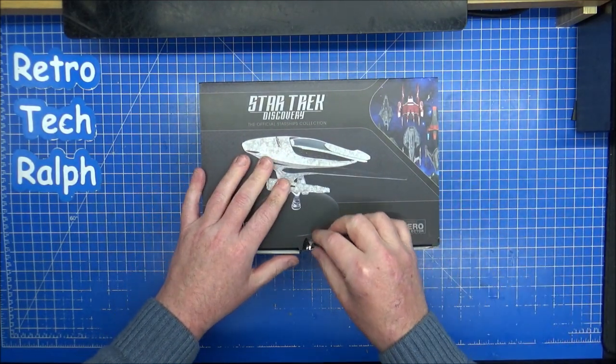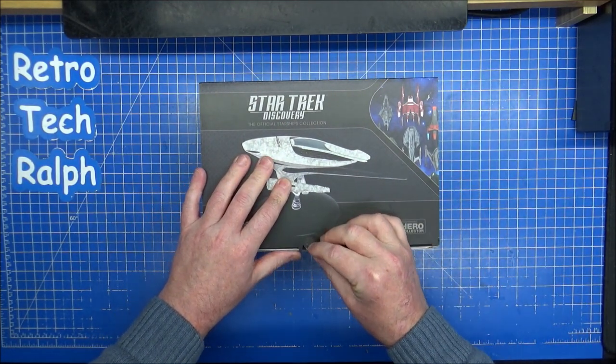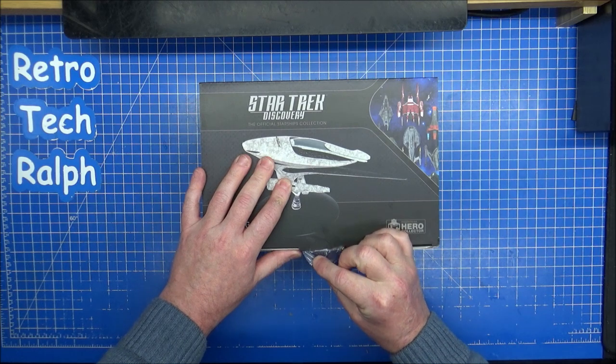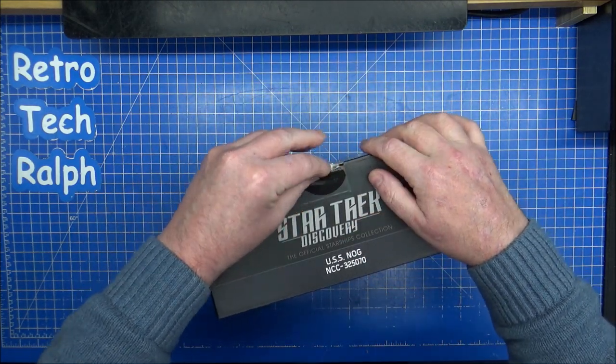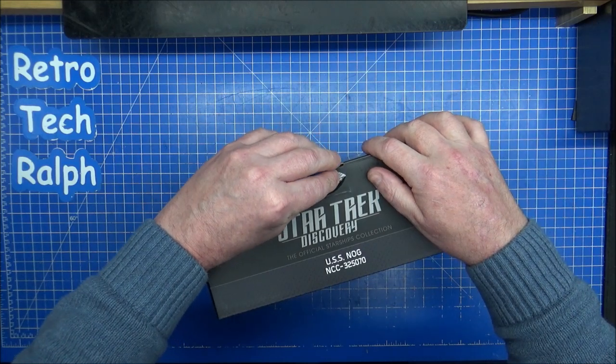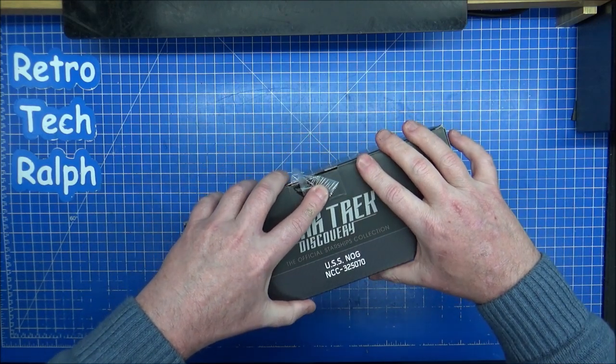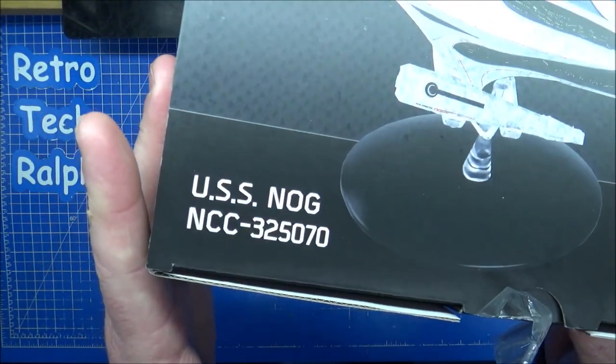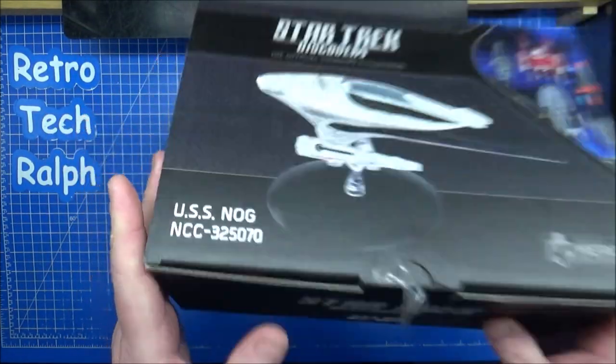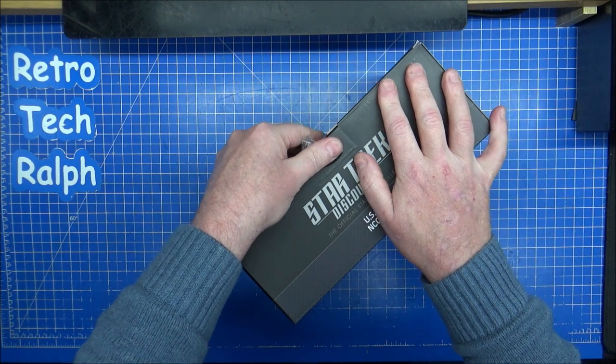Here's a very controversial statement, I hate a sealed-in box. Hi guys, Retro Tech Ralph here, finally back with another Star Trek Universe model review, magazine and model review. Before we get into the Nog, NCC 325071.